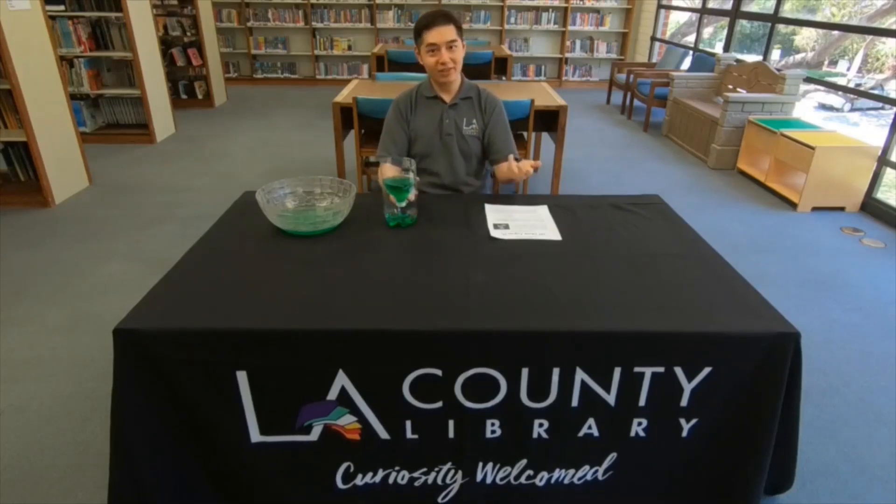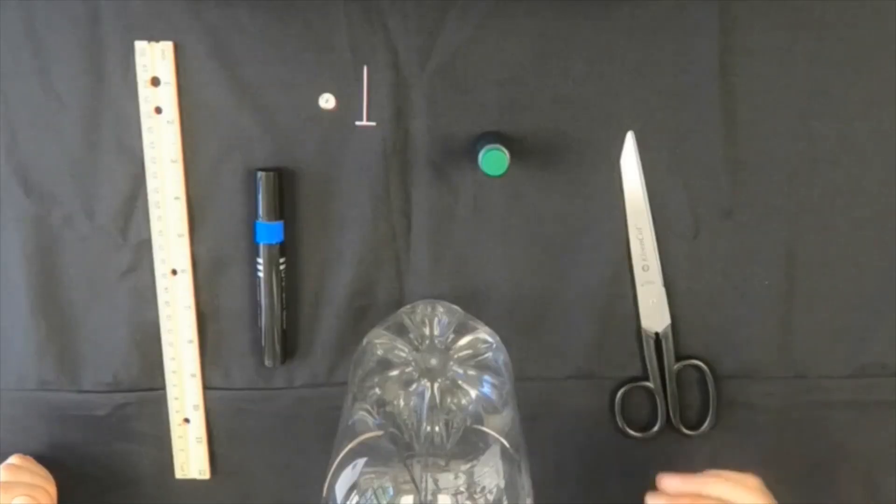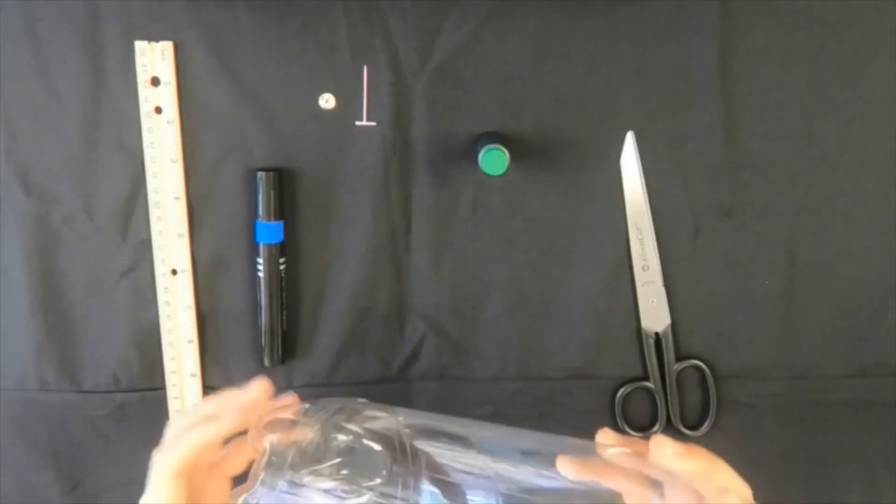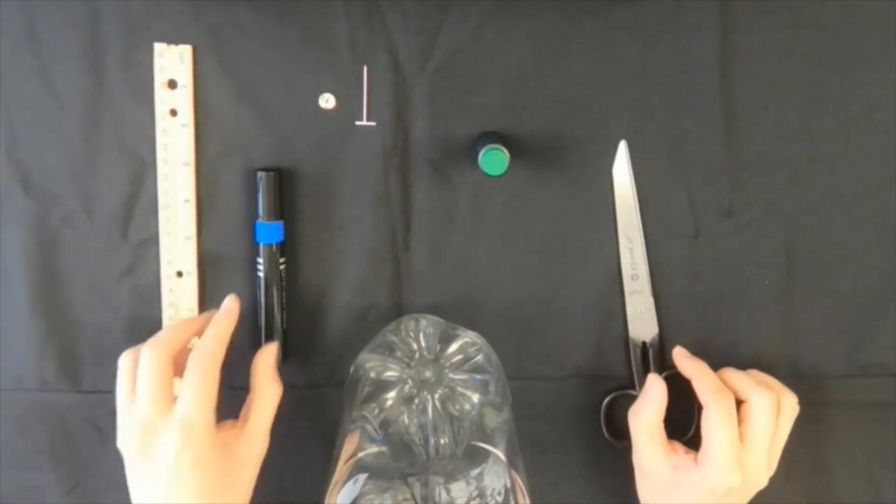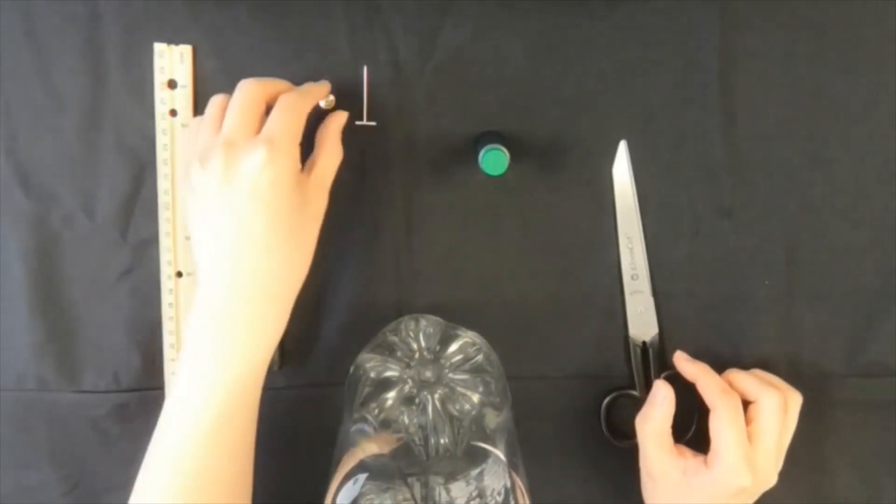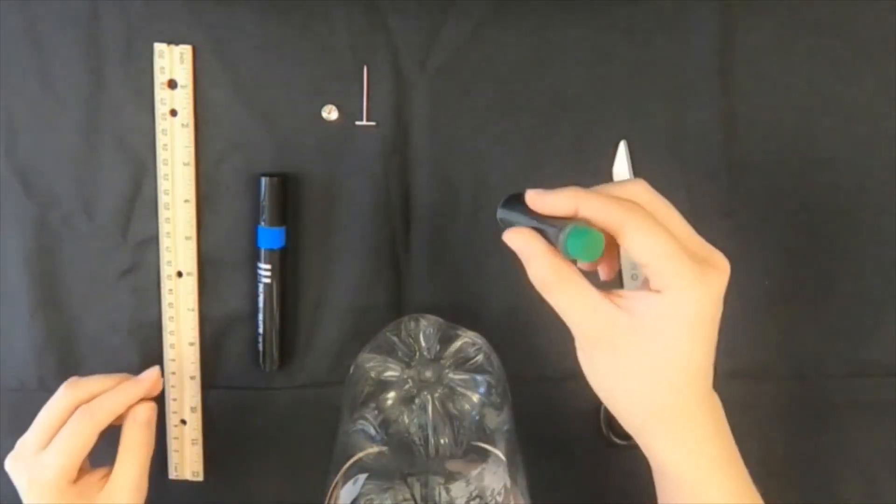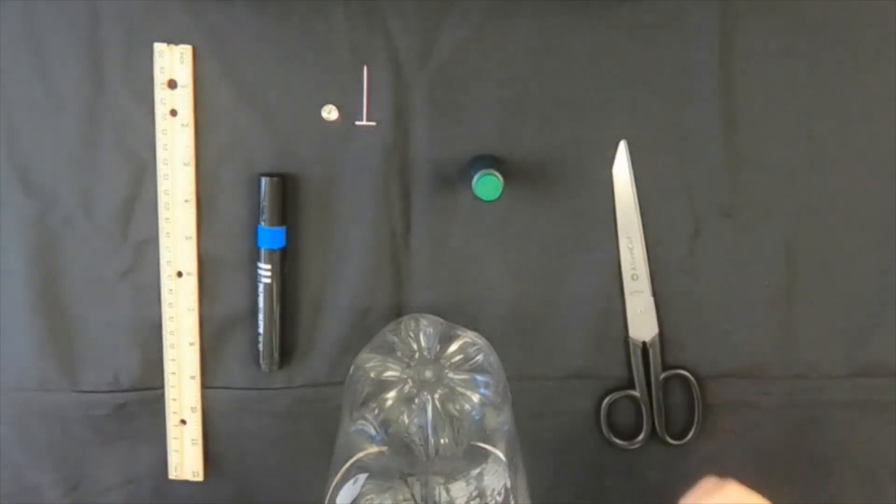Ready to make our own? Let's get started! We'll need several items for this activity. First, we'll need a clear plastic bottle, scissors, ruler, permanent marker, pins, food coloring, water, and a stopwatch.